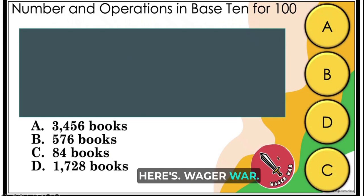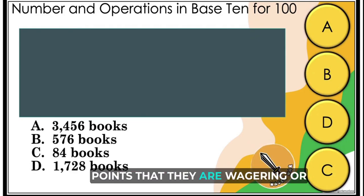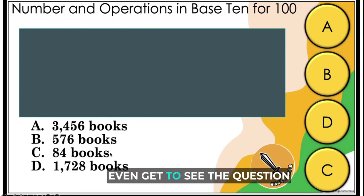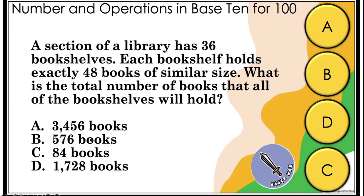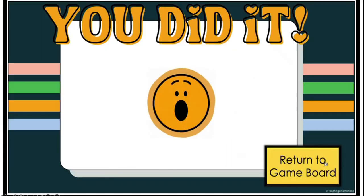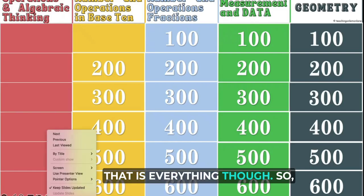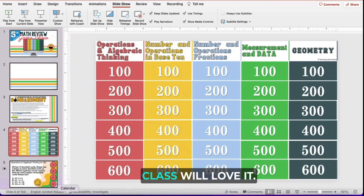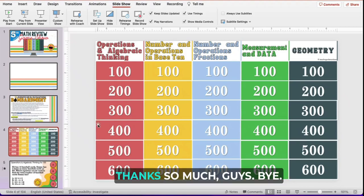Here's Wager War — the last one. Remember, when you see Wager War everyone gets to wager. They decide how many points they're putting on the line before they even get to see the question. Once everyone has locked in their point value, we click on the disappearing square and each team locks in their final answer, then we decide which response is correct. If they get it incorrectly, they lose all the points they wagered. If they get it correctly, they get those points. That is everything — I'm so excited about this game. I think you and your class will love it. If you have any questions, please email us at helloteachingonlemonlane@gmail.com. Thanks so much, guys. Bye!